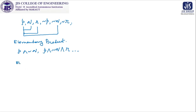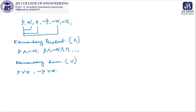Immediately, one question arises: what is an elementary sum? 'Product' we use for conjunction, 'sum' we use for disjunction. So an elementary sum is nothing but a sum — disjunction — of propositional variables and their negations. For example, p ∨ q is an elementary sum, and ¬p ∨ q ∨ ¬r is another elementary sum, because they are combinations of propositional variables and their negations. So the idea of elementary product and elementary sum is now clear.